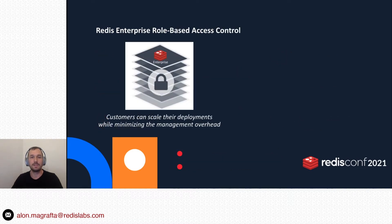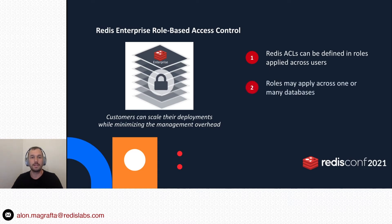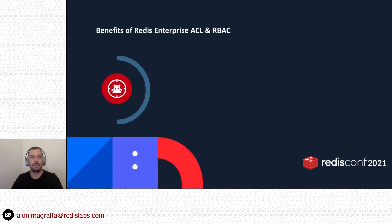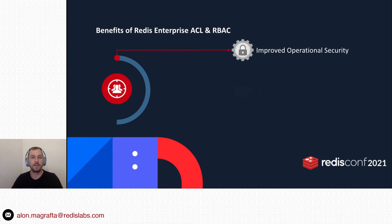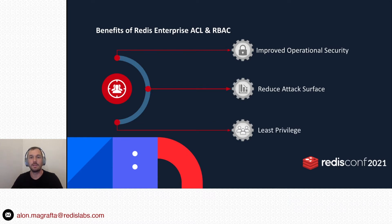Redis Enterprise scales ACLs using role-based access control. While on open source Redis, each user is defined per single database with a single ACL rule, on Redis Enterprise, users' roles and ACLs are managed by the cluster administrator across all databases in a many-to-many fashion. Roles may apply to the Redis Enterprise admin console as well as for database connections. The benefits are clear: you improve operational security with persona-based access to different users based on their job description — developers, operations, applications, and others — some with data access, others with none. You reduce attack surface by segregating data, and you apply least-privilege policies according to minimum privileges required.